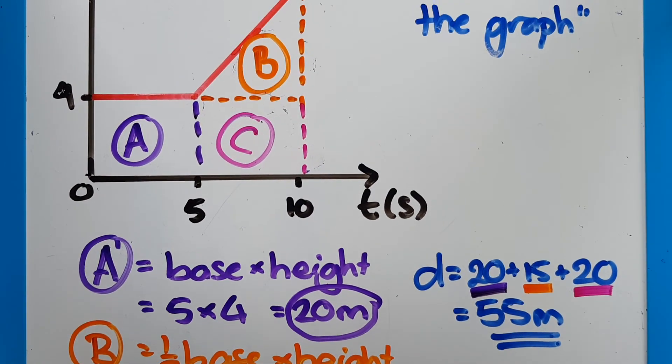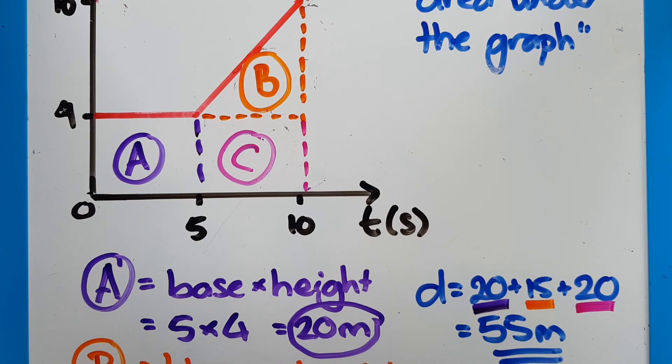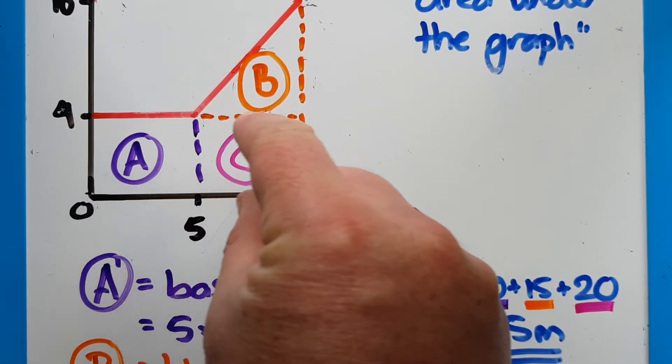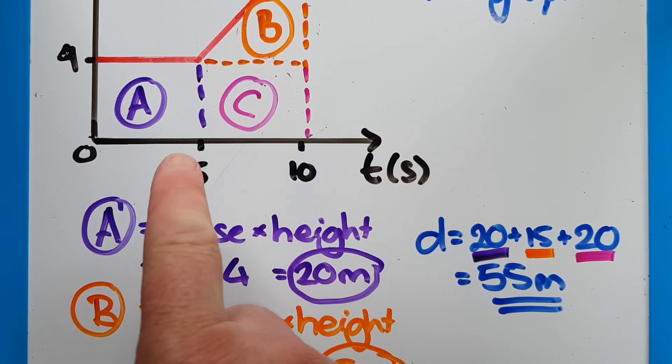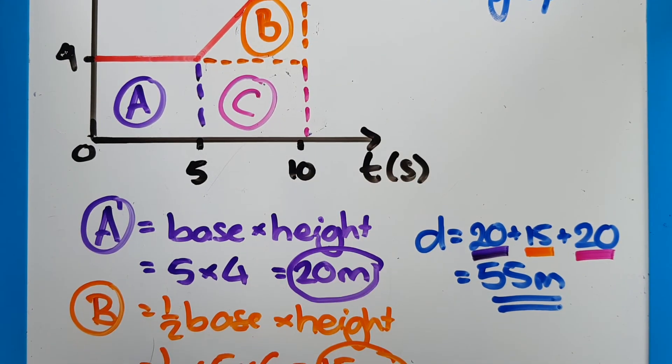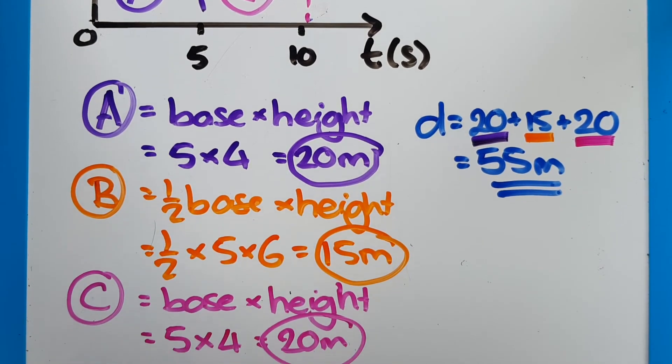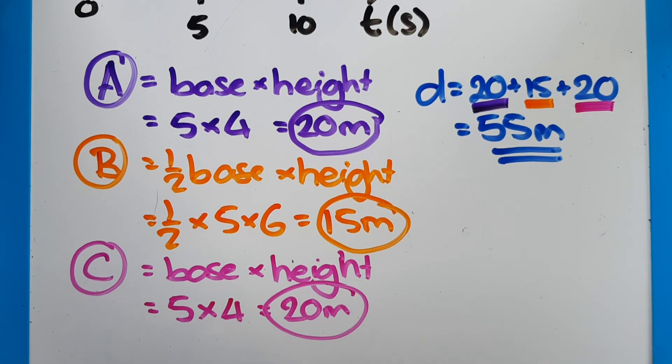So in that section B, 15 meters has been covered, but there's still this bit below it, and that's another rectangle. And again, it's another five seconds, and it's another difference of four meters per second. So the base is five, the height is four, and so I multiply those together.